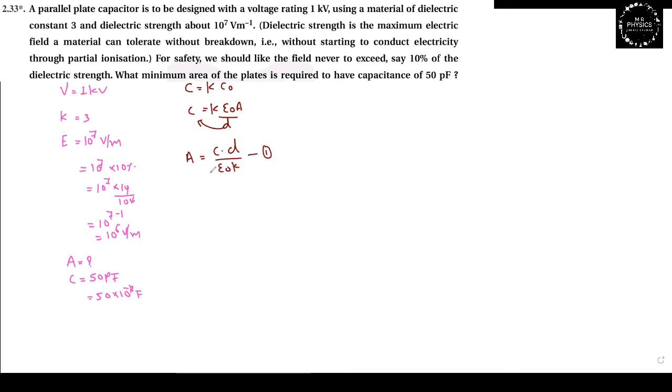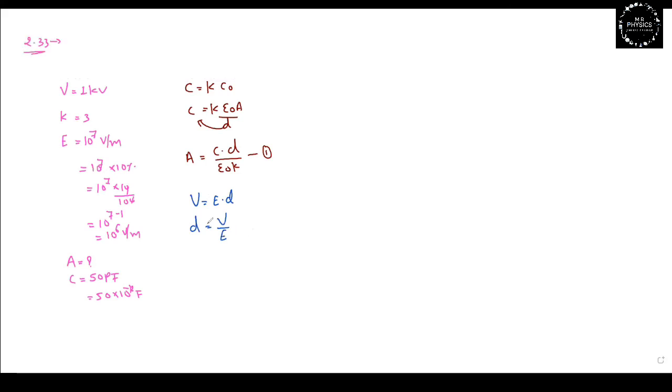The potential difference V = E × D, so D = V/E. V is 1 kV, which is 1000 volts, and E is 10^6 V/m. Therefore D = 1000/10^6 = 10^-3 meters.